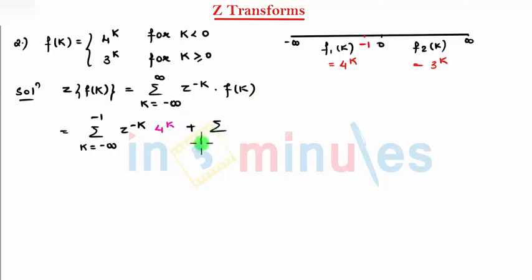plus, summation, k equal to, 0 to infinity, z raise to minus k. And, f of k for 0 to infinity is, 3 raise to k. So, let's see.